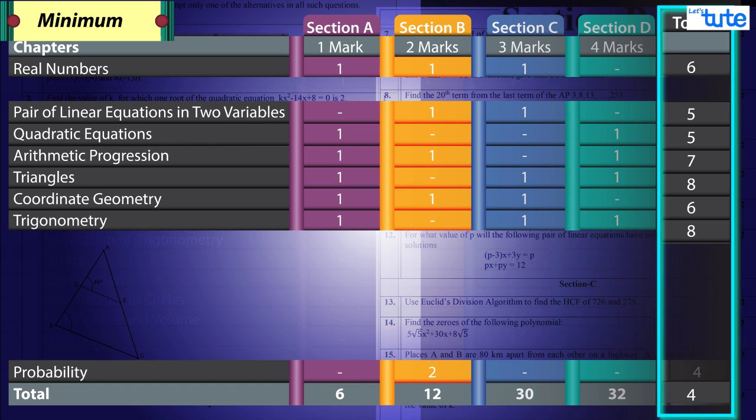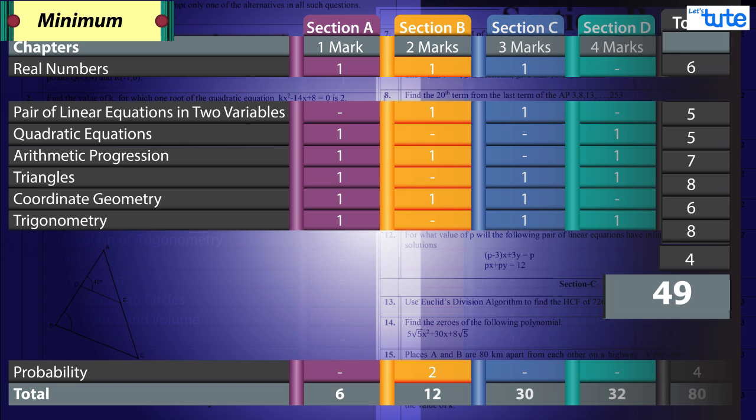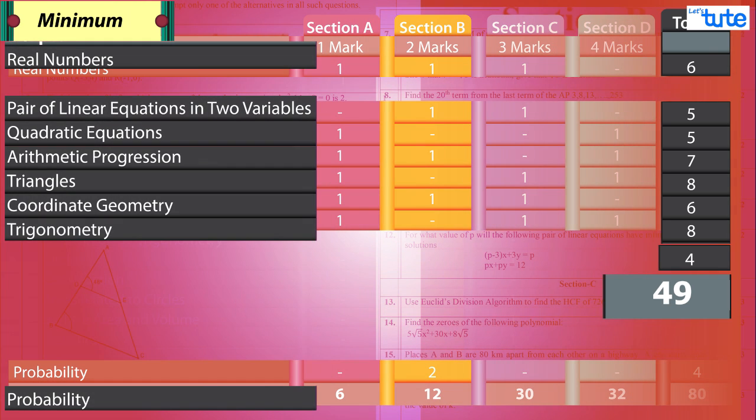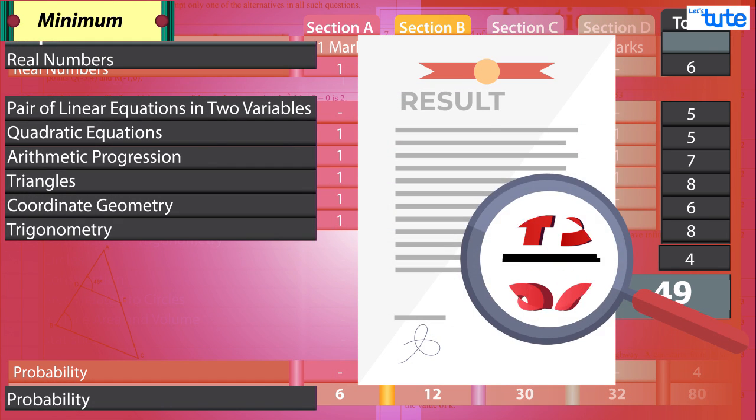If you total up the number of marks these chapters hold, it comes to 49. So if you are completely thorough with these chapters, you can really score 49 too.